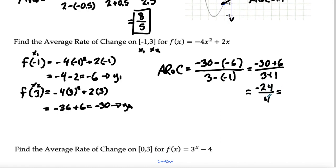That's equal to negative 24 divided by 4, which is just equal to negative 6. Our average rate of change on the interval from negative 1 to 3 is going to be negative 6.